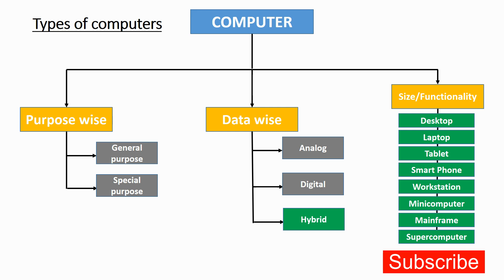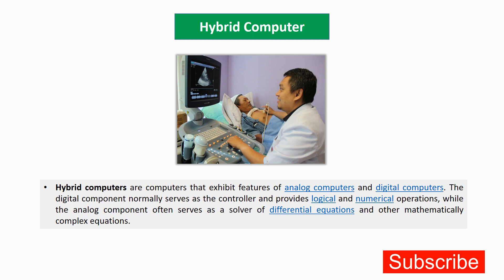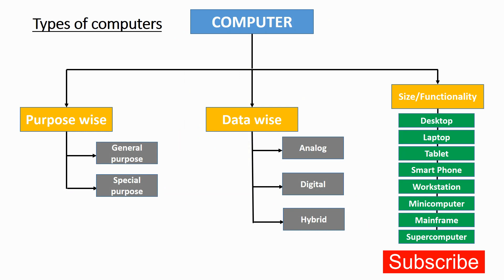The third data-wise type is the hybrid computer — a combination of analog and digital. Hybrid computers exhibit features of both: the digital components serve as the controller providing logical and numerical operations, while the analog components solve differential equations and complex mathematical equations. In simple terms, hospital computers are often hybrid — they check a patient's heartbeat using analog while also providing accurate digital data.